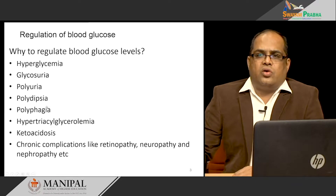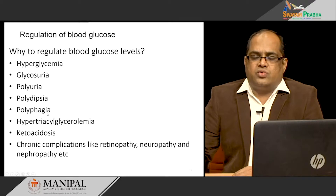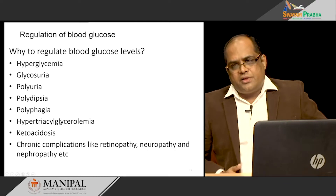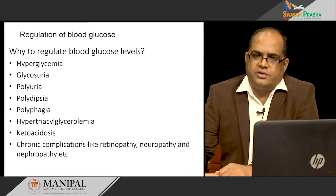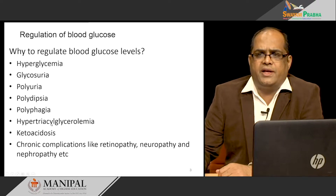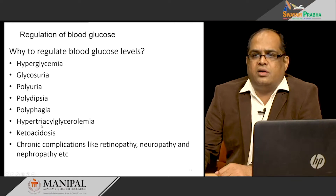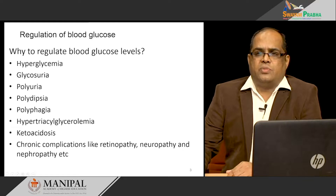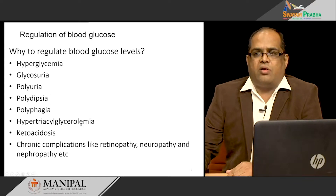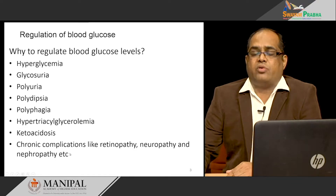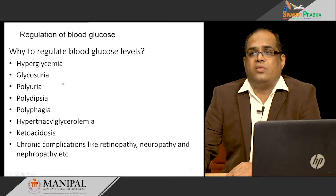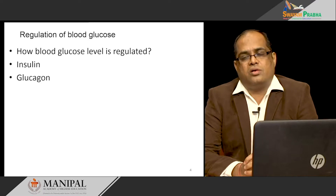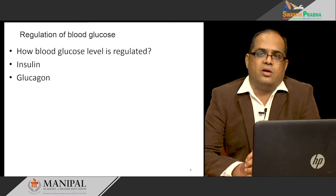If uncontrolled and glucose is too high, the body starts catabolizing the lipid stores in the adipocytes, producing an increase in the level of triacylglycerol in the blood, causing hypertriacylglycerolemia. In the long run, the patient will also have ketoacidosis — an increase in ketone bodies causing ketoacidosis. If proper treatment is not taken, chronic complications like retinopathy, neuropathy, and nephropathy can be seen. This is the reason we have to maintain our blood glucose level, normally done by two hormones: insulin and glucagon.